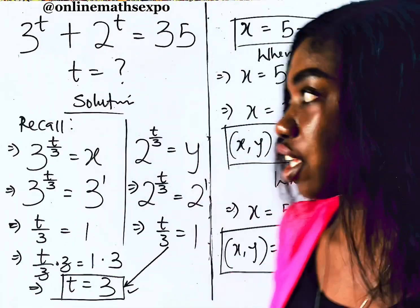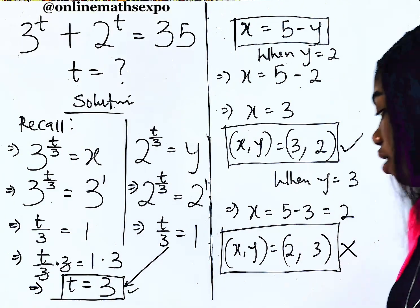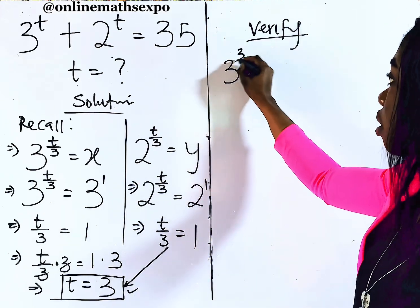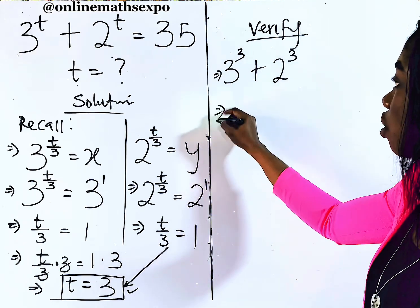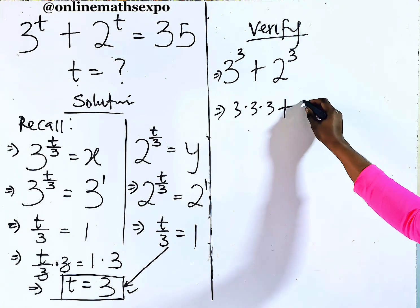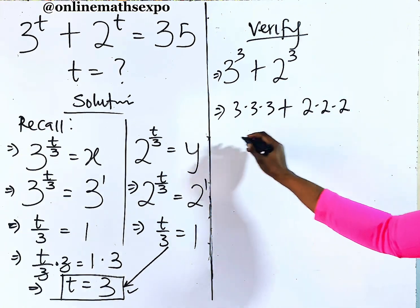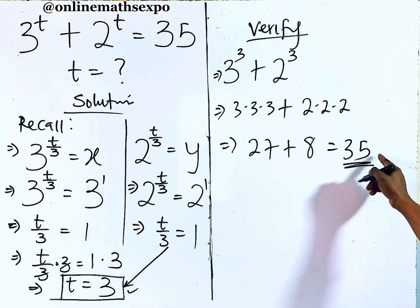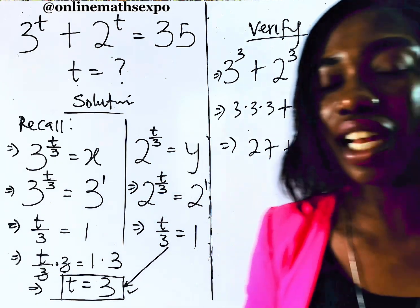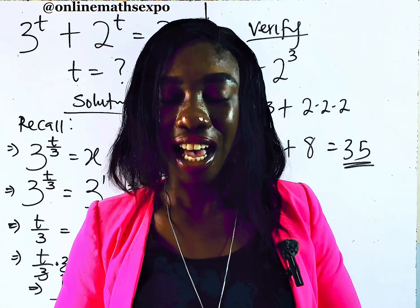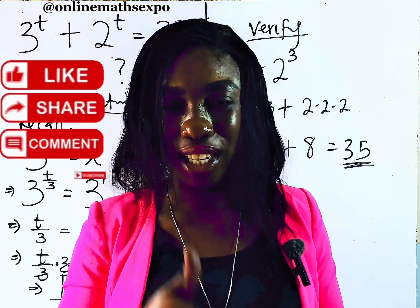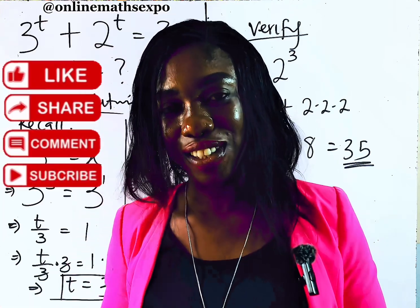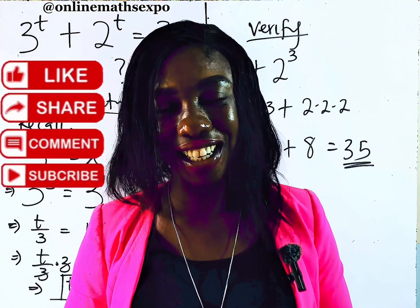Let's verify: with T equals 3, we have 3 to the power of 3 plus 2 to the power of 3, which gives 27 plus 8 equals 35. Correct! Remember we left case 2 behind — I encourage you to try that and find your value of T. If this helped you, don't forget to like and share. Sharing helps the algorithm send this to more people who need it. Thank you for always choosing to learn. See you in the next class. Bye-bye.